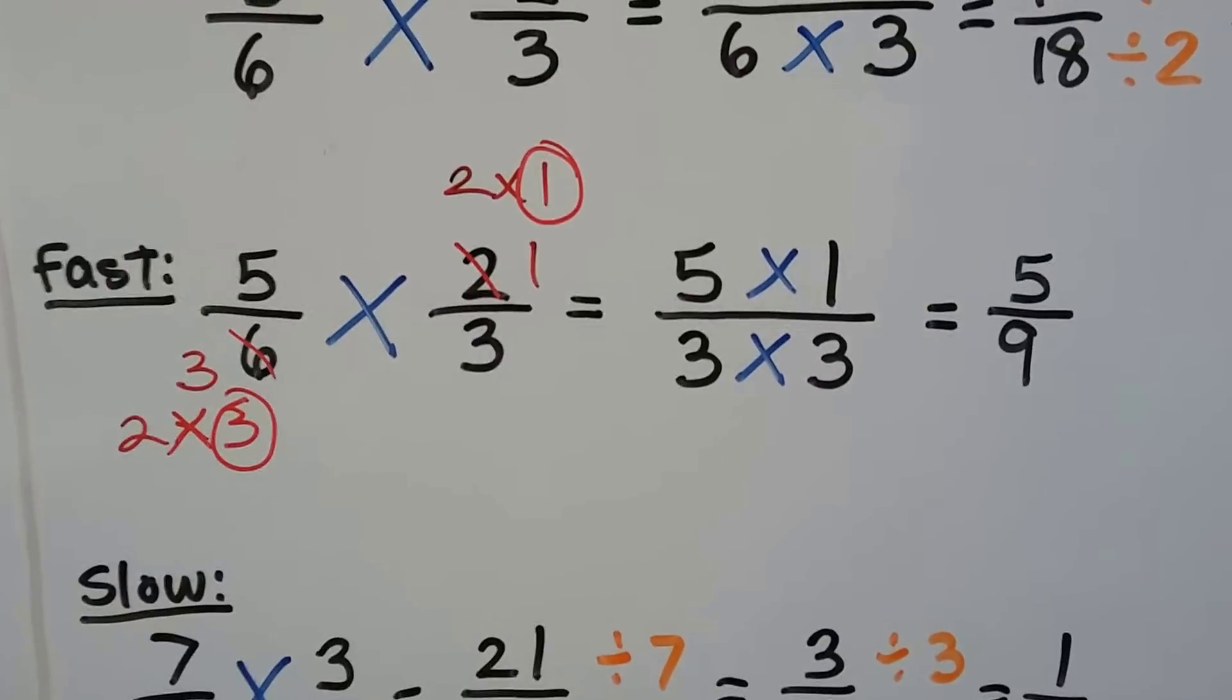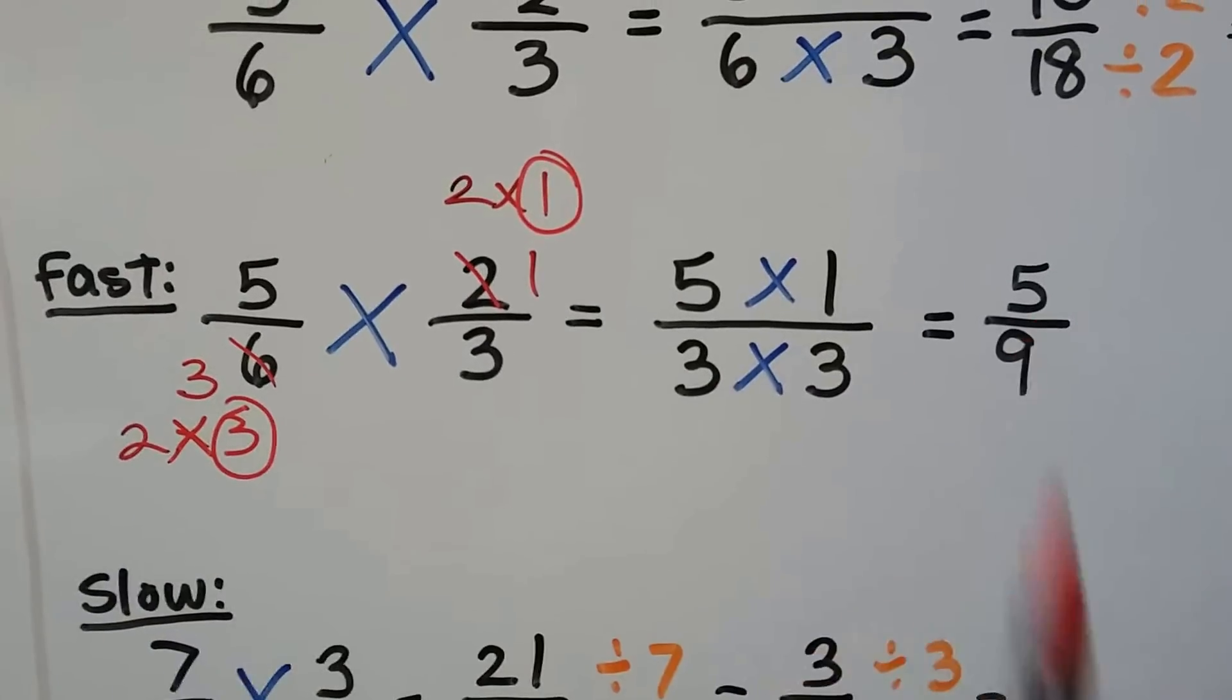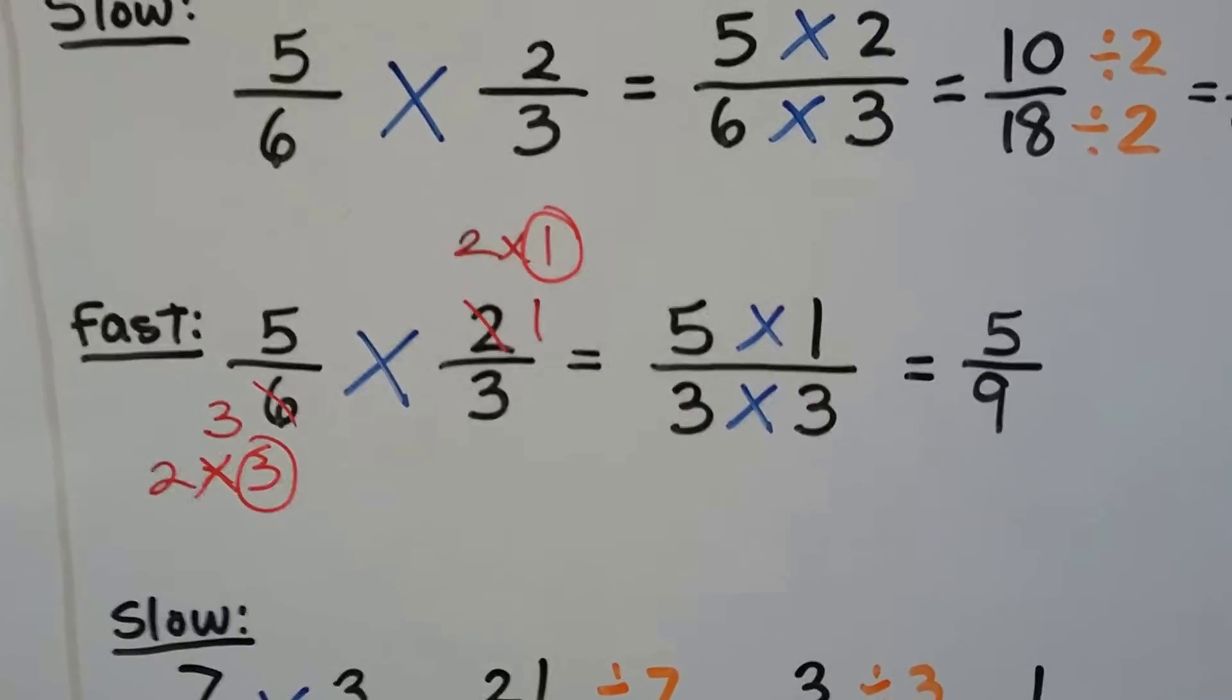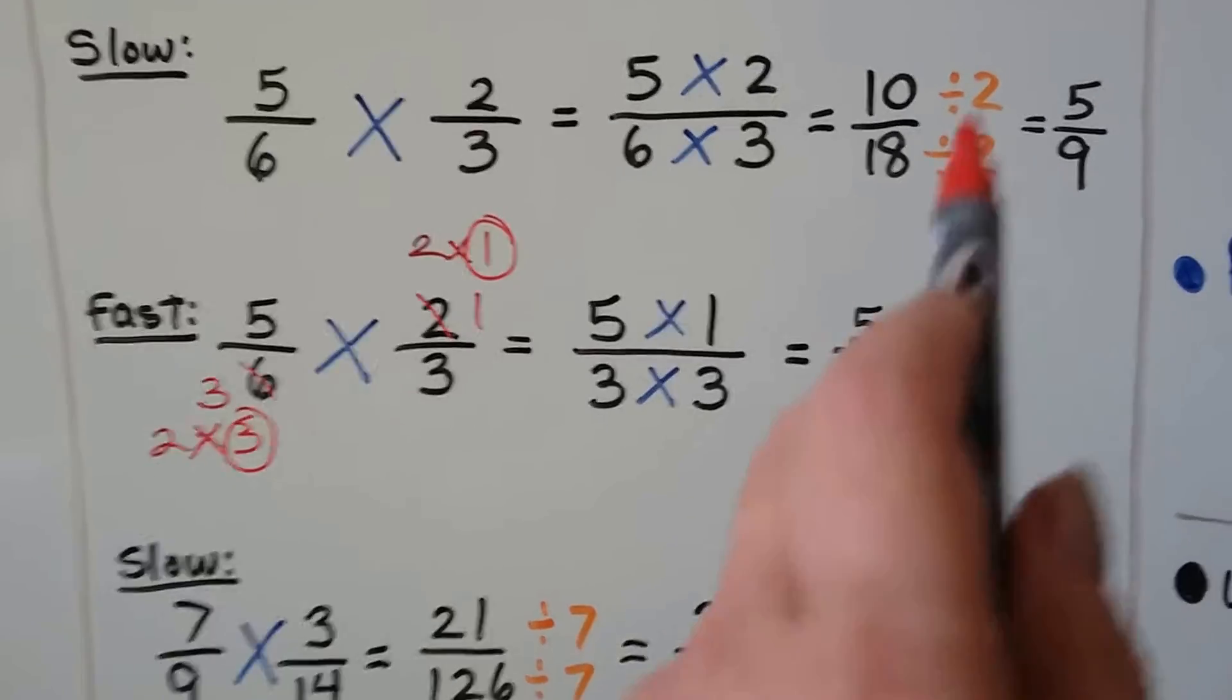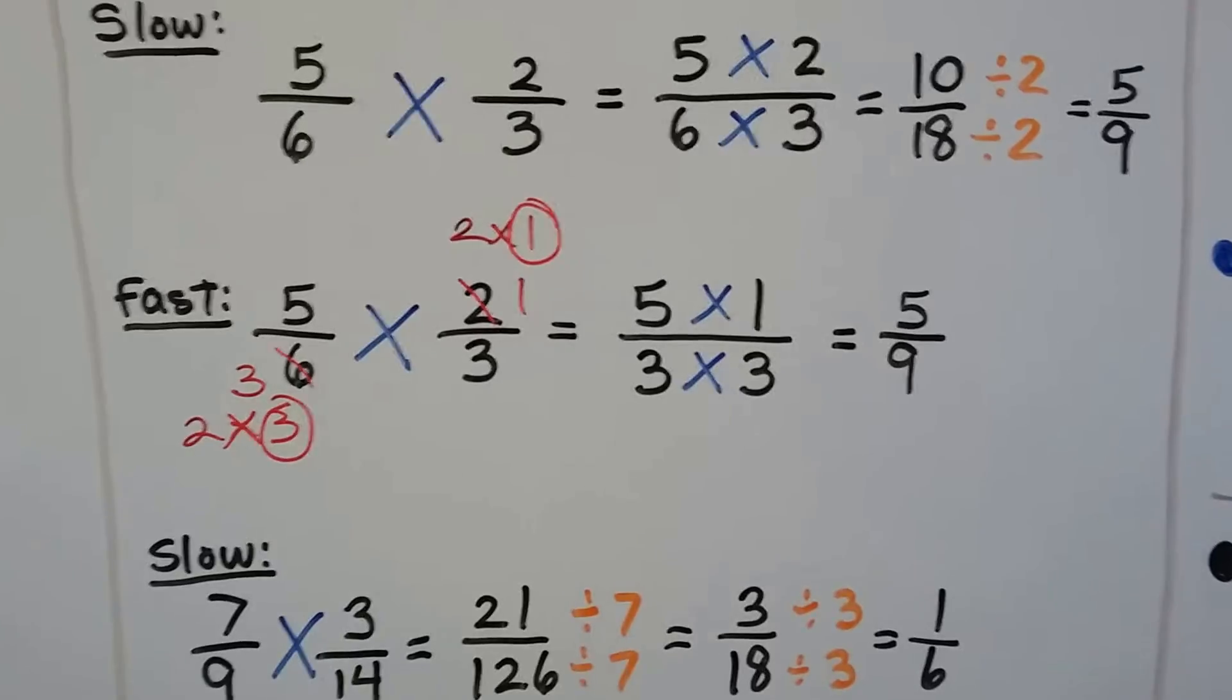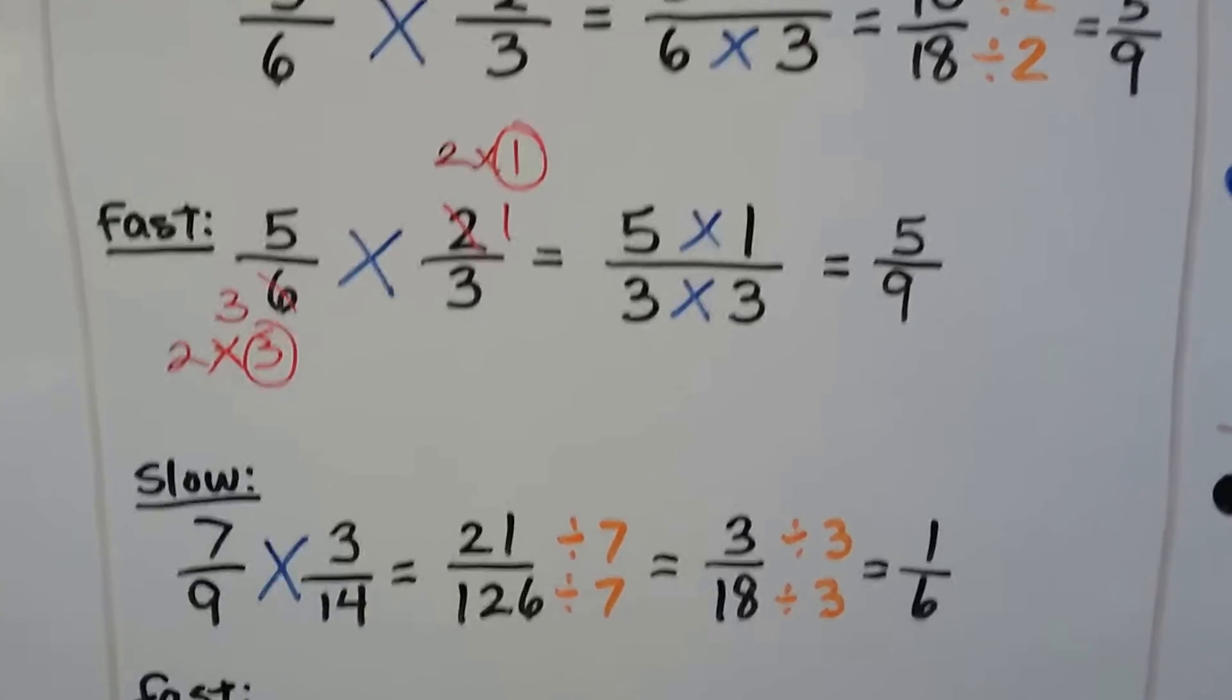It becomes a 1 and a 3. Now we do 5 times 1 and 3 times 3. That's not a 6 anymore. That's not a 2 anymore. And now it goes to 5/9. And we can do this very quickly. We really don't need to do this. I just did this to make it easier on your eyes. But we save ourselves a step. And if that means we save 15 or 30 seconds on the GED test, that's more time to do another problem.